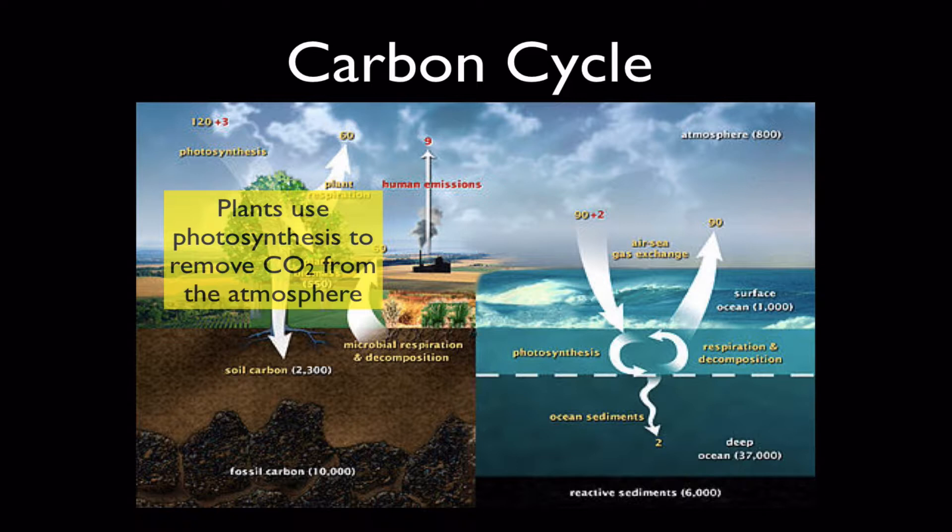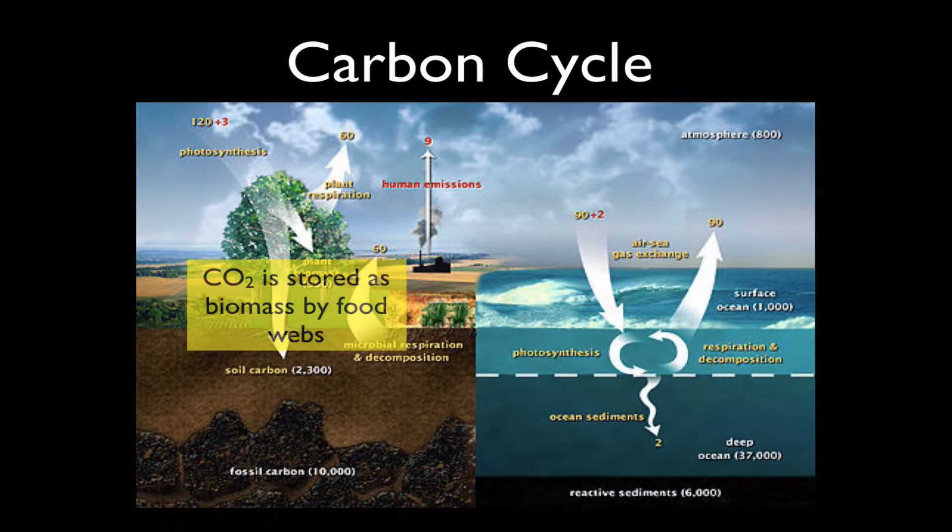First of all, how does the carbon dioxide get out of the atmosphere? Well that's photosynthesis, taking place inside plants. Plants remove CO2 from the atmosphere and fix it as biomass in their tissues. They're literally sucking CO2 out of the air and storing it in a solid form. Now this CO2 stored as biomass is accessible as food to food webs, to decomposers and consumers in food webs.